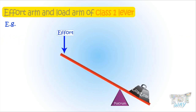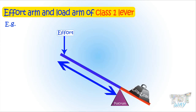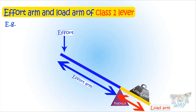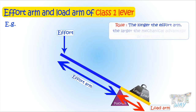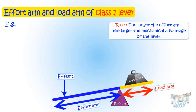Here we have a class 1 lever. This point is effort, this is fulcrum, and this is the load. The effort arm is the distance between the effort and the fulcrum, so this much is the effort arm. And the load arm is the distance between the load and the fulcrum, so this much is the load arm. You can clearly see that the effort arm is much longer than the load arm. The longer the effort arm, the larger the mechanical advantage — so this lever will give a large mechanical advantage.